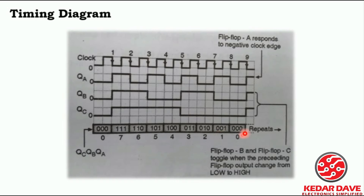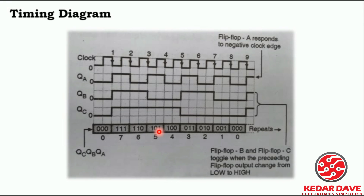It will go down to 001. Flip-flop A responds to the negative clock edge. Flip-flop B and flip-flop C toggle when the preceding flip-flop output changes from low to high — because we have represented QA bar as the clock input to the next flip-flop. Whatever output we get from QA bar is given to the next flip-flop's clock pulse. In this way it decreases from triple 1 down to 000, and the timing diagram clearly shows the operation of the 3-bit asynchronous down counter.